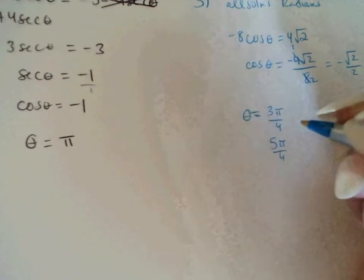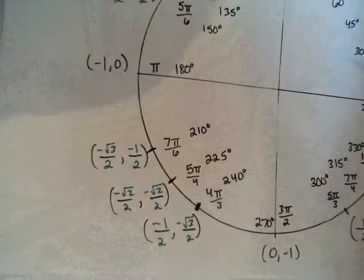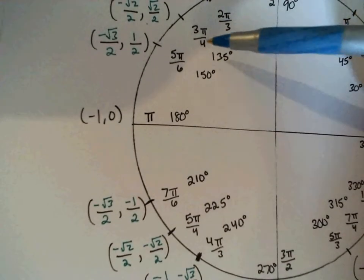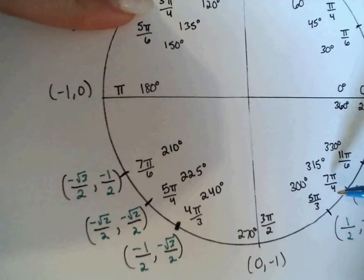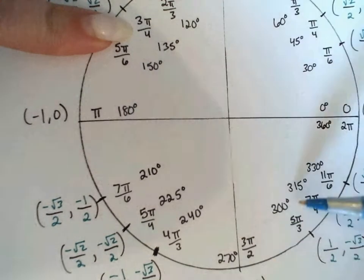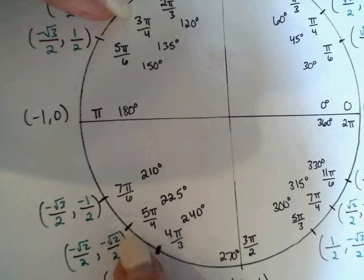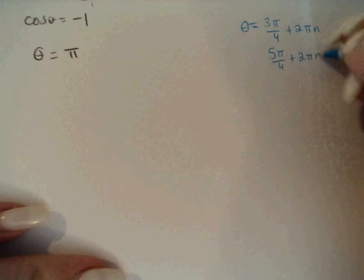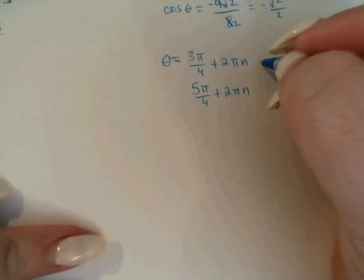Now, just as a reminder, 3π/4 and 5π/4 are not the same distance apart. If it were 3π/4 and 7π/4, I could say it's every π away, so plus π for each. But as it is, I'm just going to say plus 2πn for each, where n is an element of the integers, meaning every full rotation after that as well.